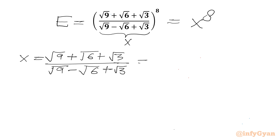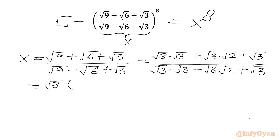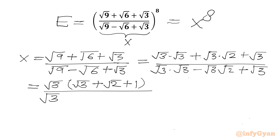Now I can factorize our numbers. √9 = √3 × √3, √6 = √3 × √2, and √3 as it is, divided by √3 × √3 minus √3 × √2 plus √3. Now we can take √3 common from the numerator and denominator. So we will have in the numerator (√3 + √2 + 1), and in the denominator (√3 - √2 + 1).